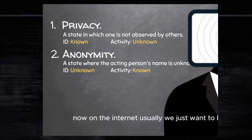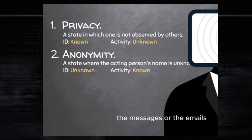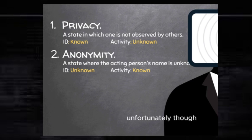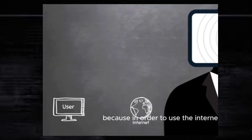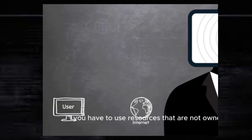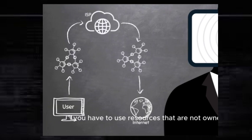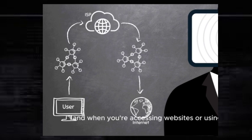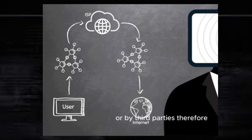On the internet, usually we just want to be private — we don't want other parties to be able to see the messages, the emails, or whatever we do online. Unfortunately, it is very difficult to be private on the internet, because in order to use the internet, you have to use resources that are not owned by you. You have to use an internet service provider, and when you're accessing websites or using services, you're using servers owned by these services or by third parties. Therefore, you can't really control how your data is being handled.